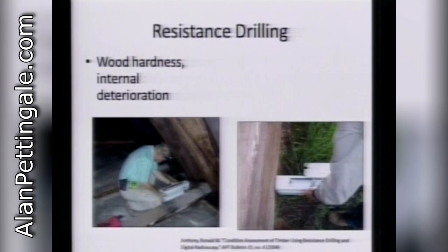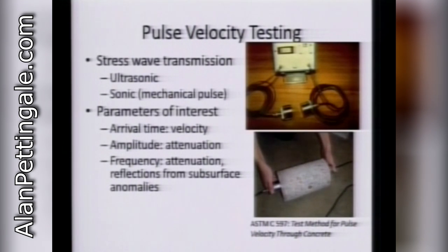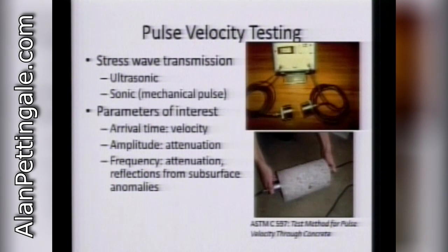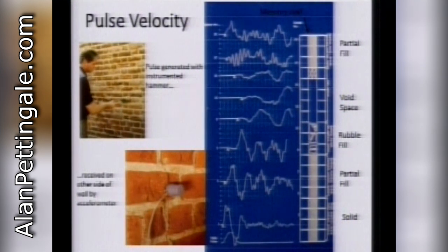Resistance drilling tells you how hard the resistance is — if you have very soft or very hard mortar, it might indicate age, because of whether it's cement-based or lime-sand-based mortar. There's also data visualization and pulse velocity testing, where a vibration is sent through a material and from that you can back out calculations for modulus of elasticity and other properties. You can use this for wood with two probes far apart, hitting a rebound hammer.